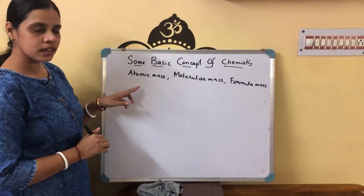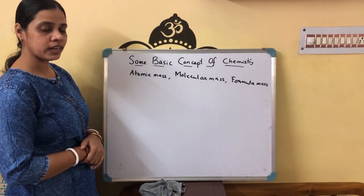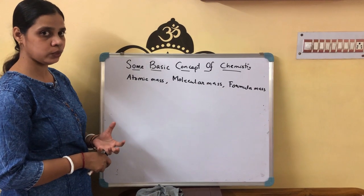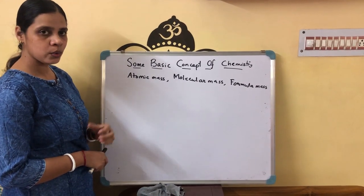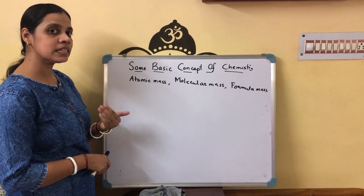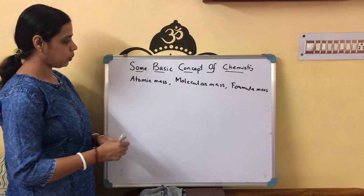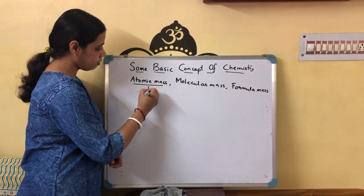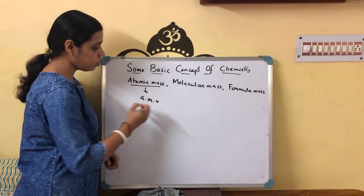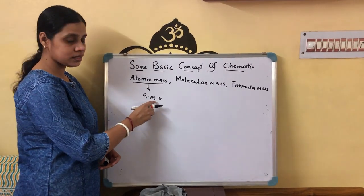What is atomic mass? Atomic mass is the mass of an atom. But you know, an atom is so small, so we do not directly calculate the atomic mass. We can calculate the atomic mass by taking the help of a scale, and the name of the scale is AMU scale. The full form of AMU is atomic mass unit.